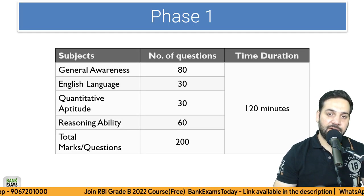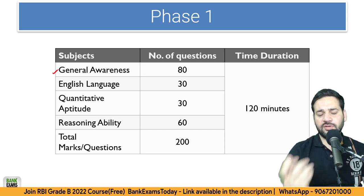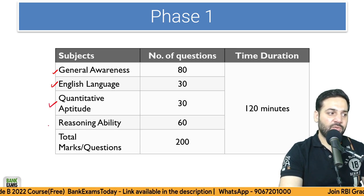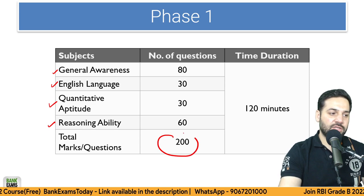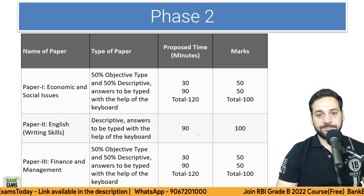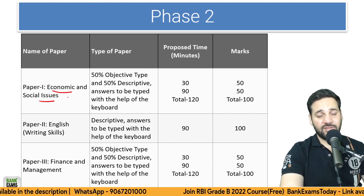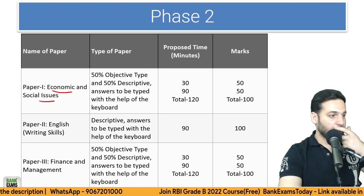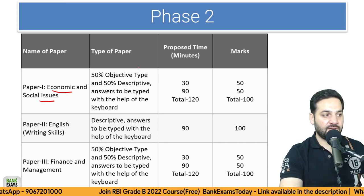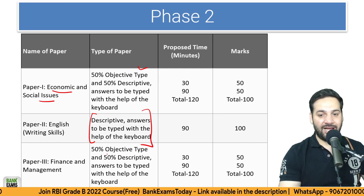Let me tell you the exam pattern. Phase 1 includes General Awareness — mostly financial awareness — 80 questions, then English Language, Quantitative Aptitude, and Reasoning Ability, totaling 200 questions in 120 minutes. In Phase 2 there is Economic and Social Issues, with 50% objective type questions and 50% descriptive questions, plus Descriptive English and Finance and Management — 100 marks each.